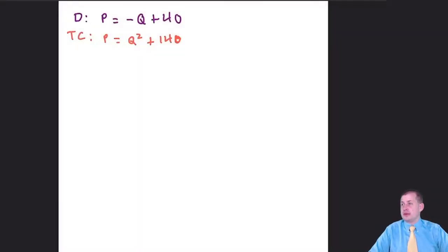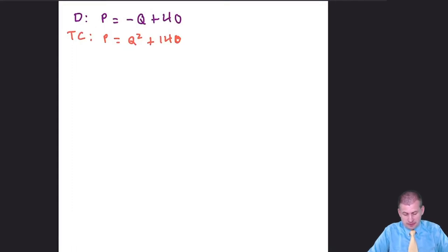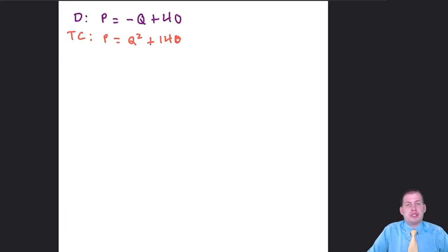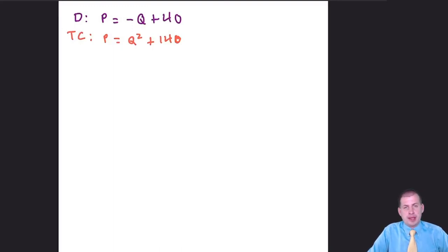The only thing we're going to start with are these two equations. We have a demand curve that starts at 40 and goes down, and then we have the total cost for this monopolist. This is one firm that has total control over the market, so their total cost is Q squared plus 140.